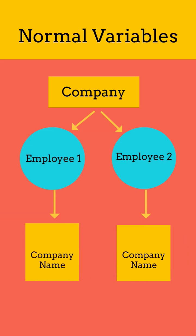This means if we are creating 100 objects, then for a class name variable, Java will allocate the memory 100 times, even though it is storing the same value — i.e., the name of the company.